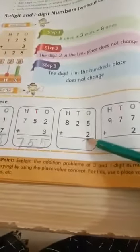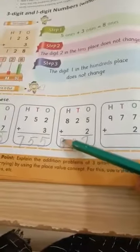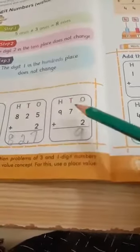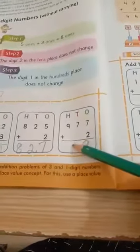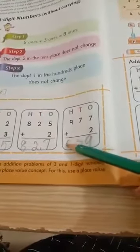5 plus 2? 7. 2. 8 ki niche kuch nahi hai, to 8. 8, 27. 7 plus 2? 9. 7 ki niche kuch nahi hai, to ye 7. Or 9 ki niche kuch nahi hai, to ye 9. 9, 79.